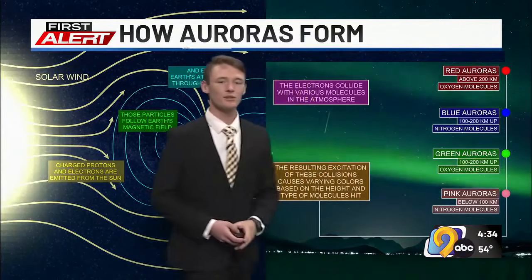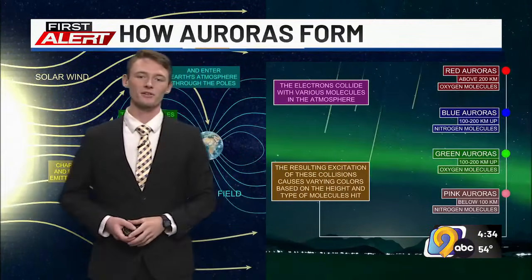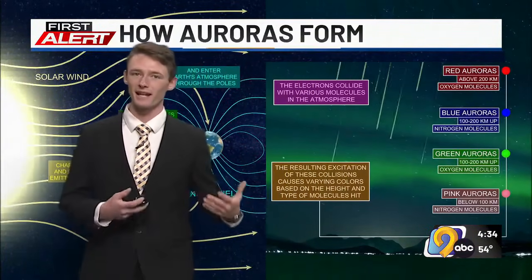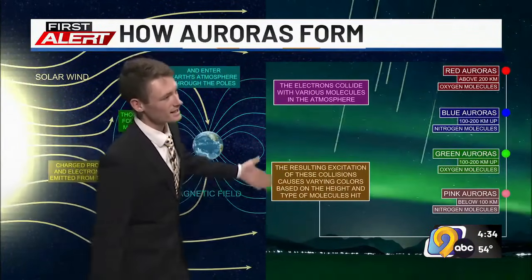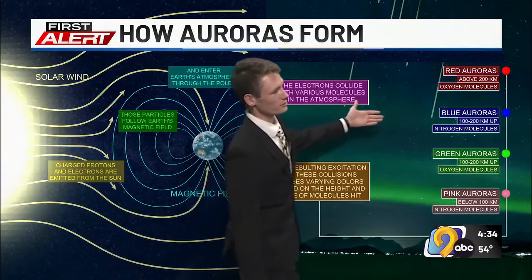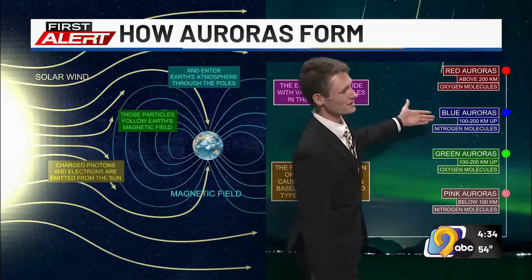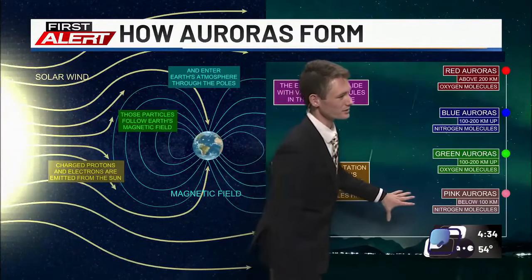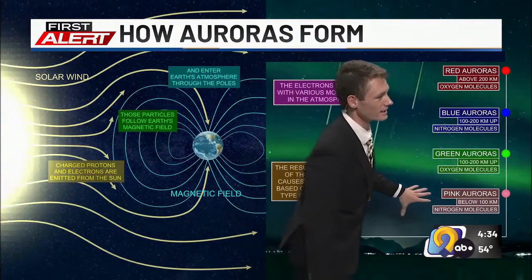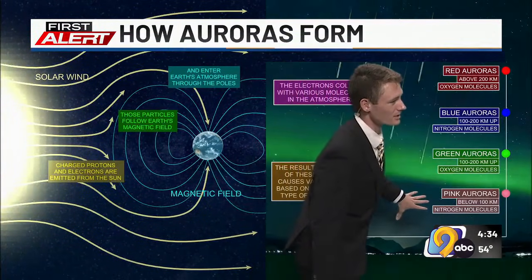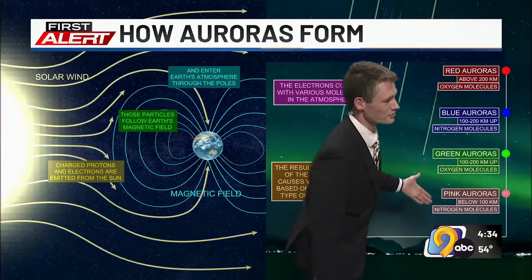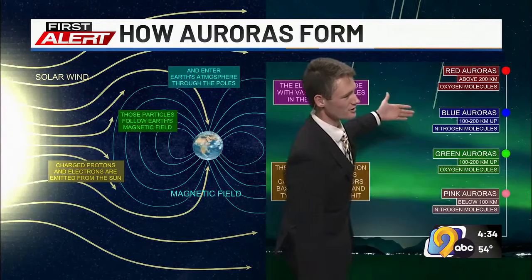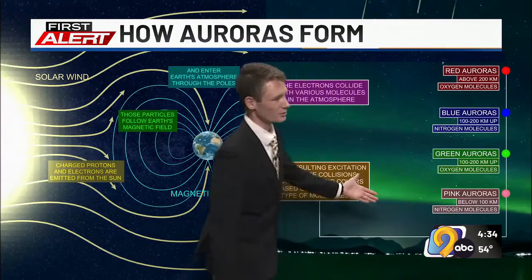green color. And as those charged particles interact with nitrogen, that can give you more of those blue colors and some pink auroras, where you get nitrogen molecules that are struck by those charged particles lower down.